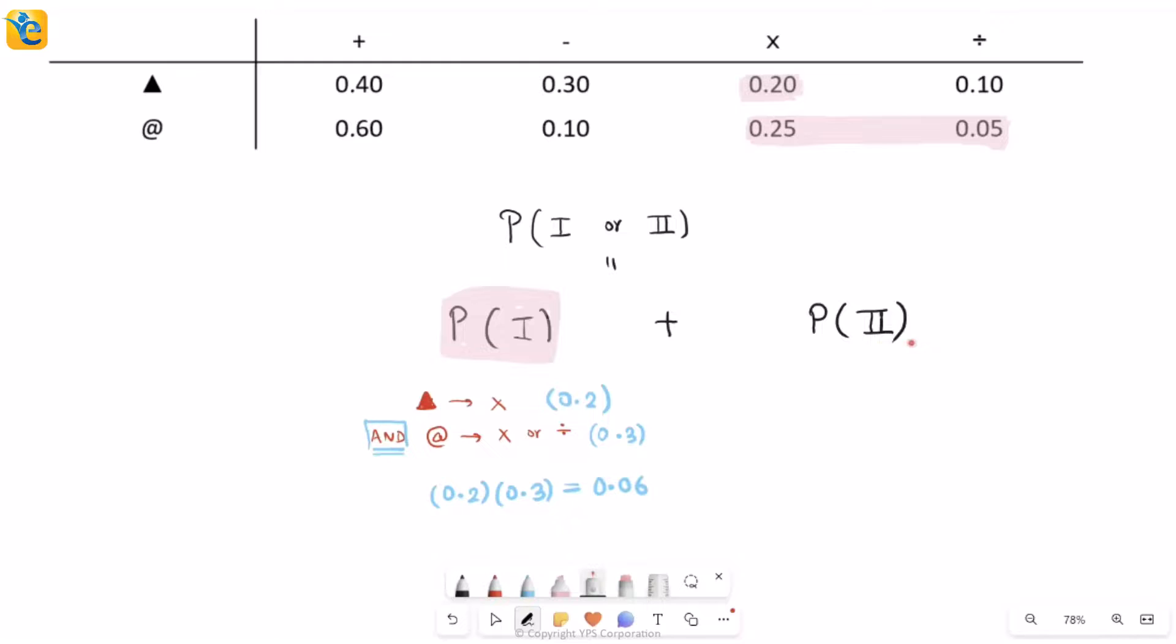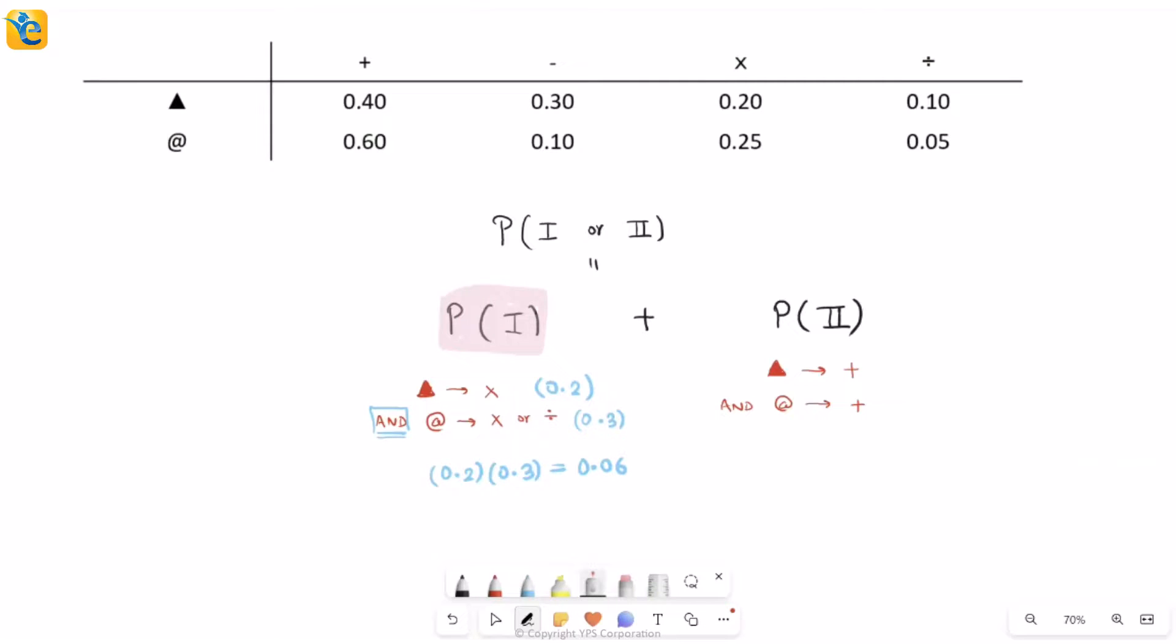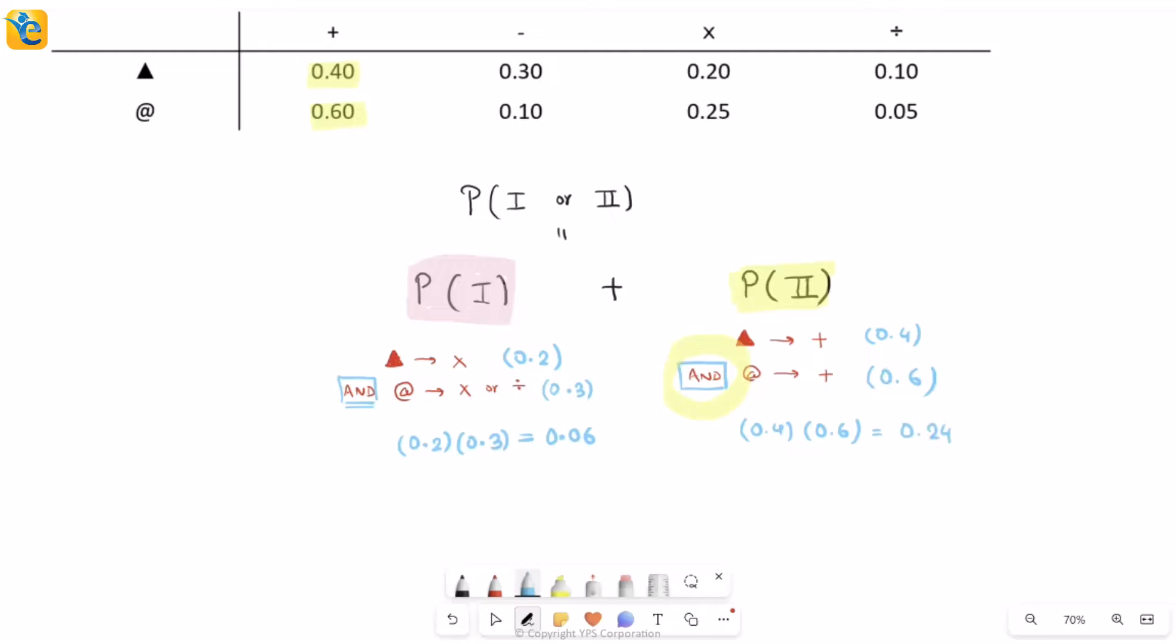Now I have to think about the second one. For this, we'll just see what the second event was. If you see, the second event was triangle being replaced by addition and at the rate also being replaced by addition. So let's see this now. Perfect. So again, notice that you have an AND connecting both of these. So once you find individual probabilities of these two, you will multiply them. So first think about this triangle being replaced by plus. So here I have it in my table, 0.4. Very quick, just a single value I'm reading. Similarly, at the rate by a plus is also the first entry in the second row. This is 0.6. And so when I combine both of these with an AND as I was supposed to, I'm simply going to multiply these two to get my overall probability of the second event. This product is going to give me 0.24.